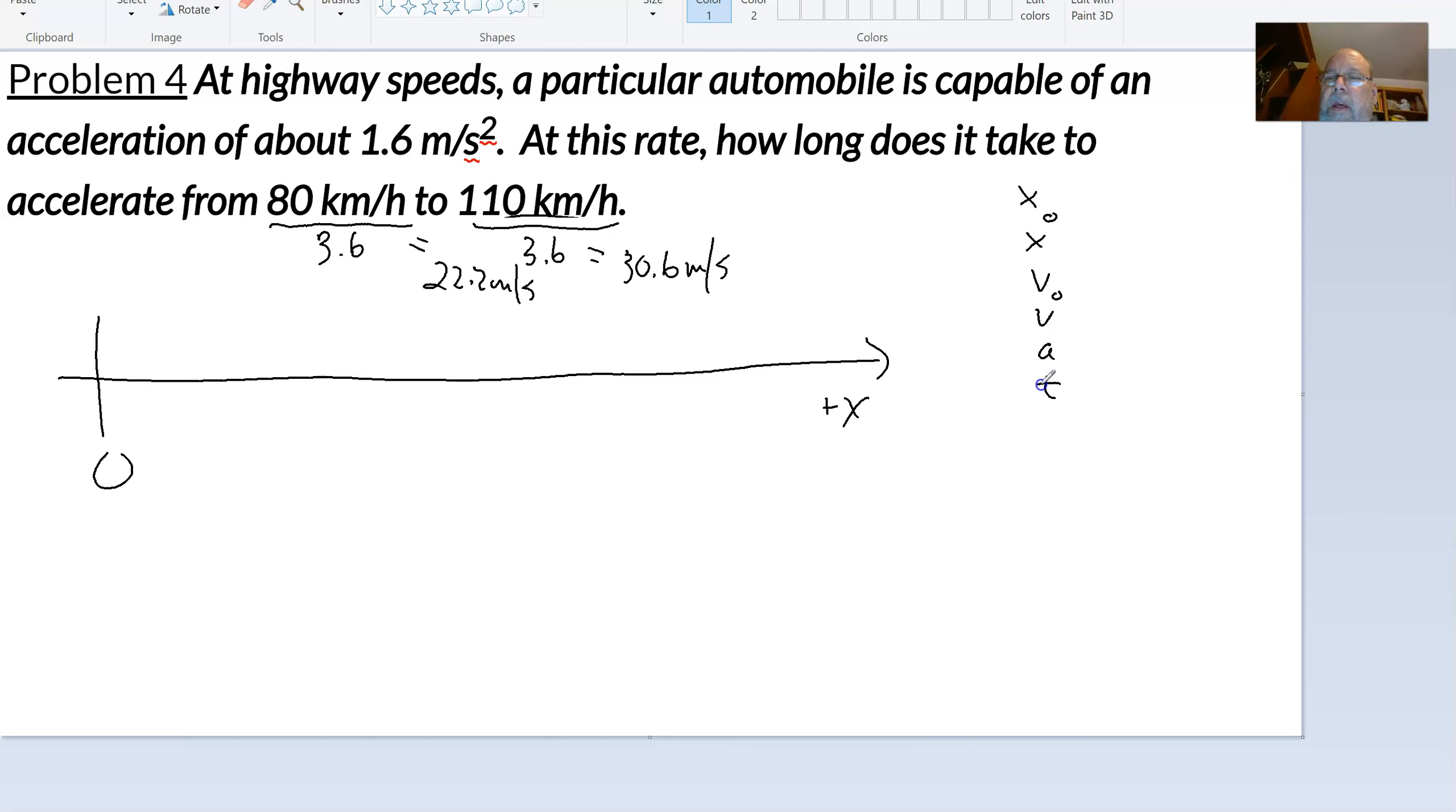And the information that the problem leaves out that you have to assume doesn't get lost. For example, the problem doesn't tell you what your initial position is. It doesn't say your initial position is such and such. So when that happens, we're free to assume that our initial position is zero meters. In this case, we're also not told what our final position is, so we'll come over here and say x is question mark.